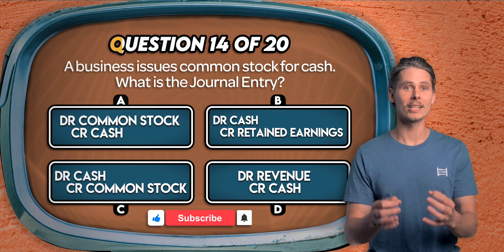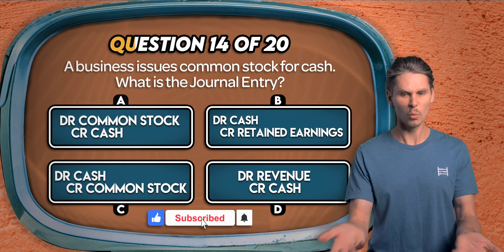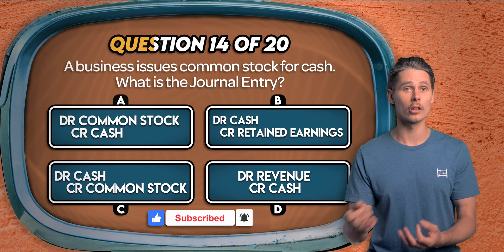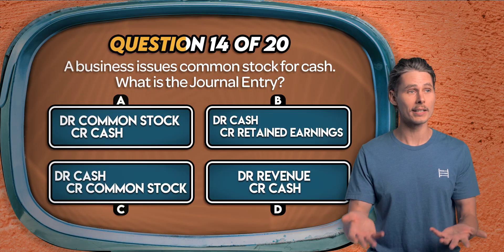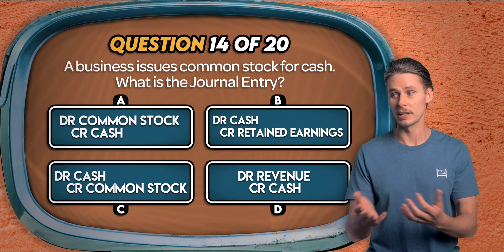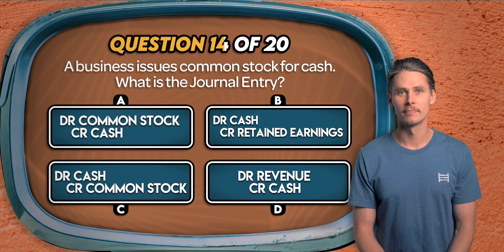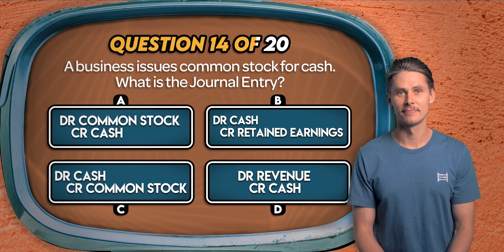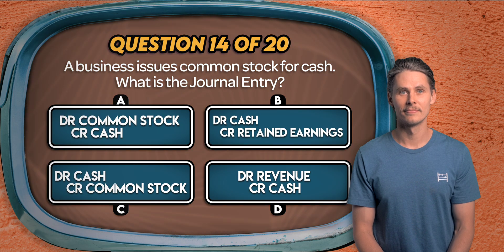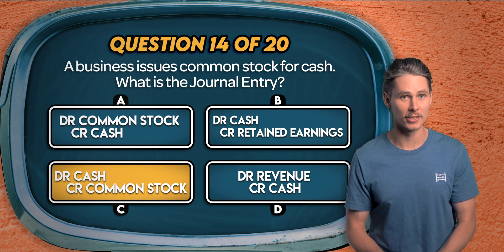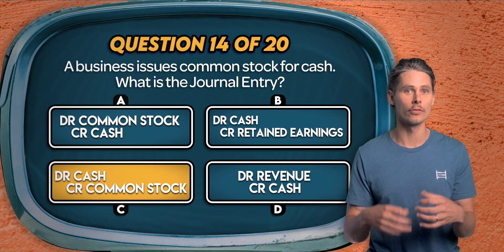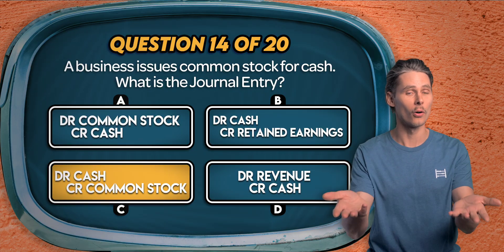Question 14. A business issues common stock for cash. What is the journal entry? Is it debit common stock credit cash, debit cash credit retained earnings, debit cash credit common stock, or debit revenue credit cash? It's C. We debit cash to record the cash inflow, which increases assets on the balance sheet, and we credit common stock to record the new shares, which increase equity on the balance sheet.